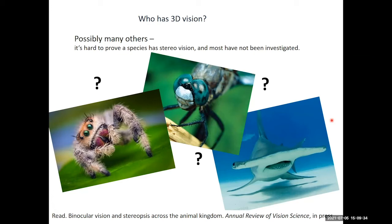People ask about jumping spiders — do they have stereopsis? It's very likely they do. Out of their eight eyes, one pair right on the front are very large, high resolution, and of course they jump, so they need to know distance very accurately. But nobody has done an experiment to prove it. Dragonflies have also been suggested to use stereopsis. The hammerhead shark evolved an enormous head with eyes very far apart, giving a huge baseline that would improve precision of stereopsis. It's an exciting area and maybe some of you will do experiments to investigate some of these animals.